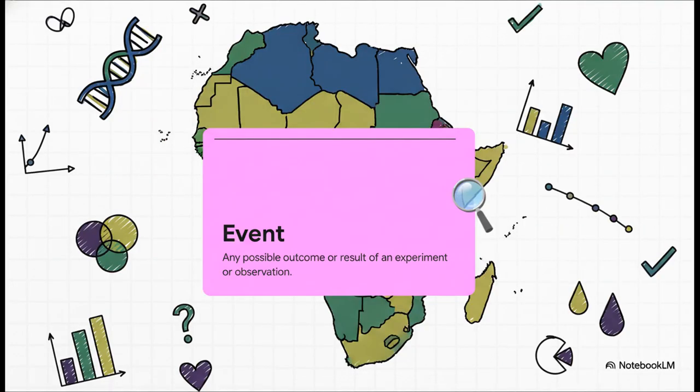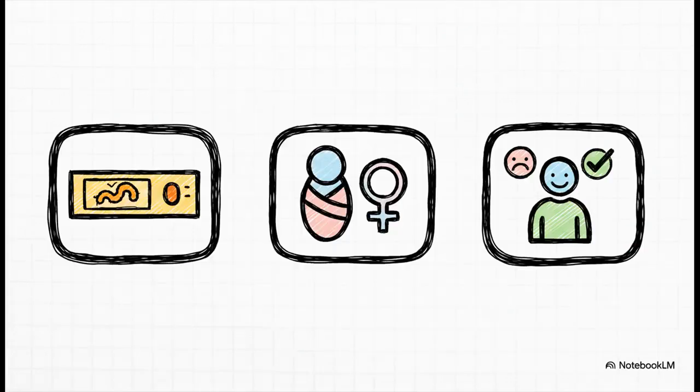So you might be wondering, what's the thing we're actually measuring the probability of? Well, in statistics, we have a simple word for that. An event. An event is really just any specific outcome that you can watch happen and write down. And listen, this isn't some abstract idea.